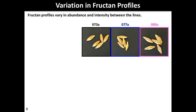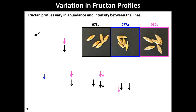For the individual lines, we have individual profiles which change in abundance between the lines and also in the profile itself. The black line in the slide showed increased amounts for all the fructan peaks. For the blue lines, we saw reduced contents in all the fructans, but just one particular compound was notably increased. For the line in pink, it showed moderate to low amounts for all the fructans.